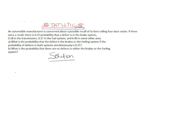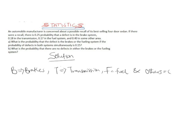First of all, let's denote the probabilities with letters. Let B denote the probability of the brake system, T for transmission, F for fuel system, and O for the other parts not specifically mentioned.